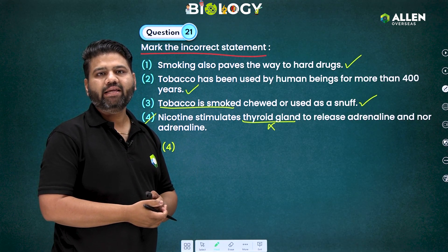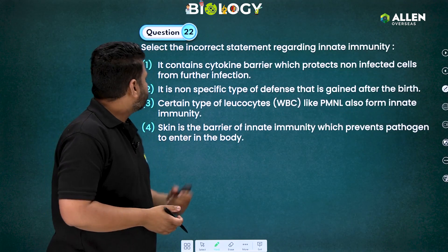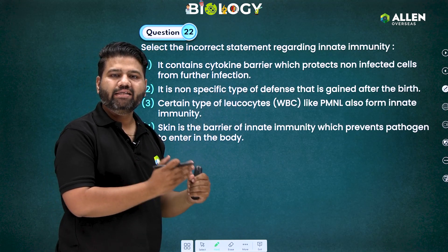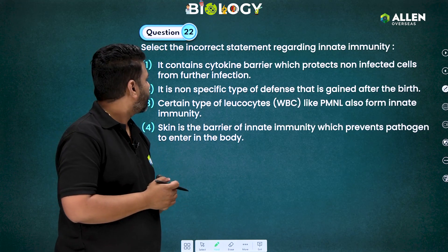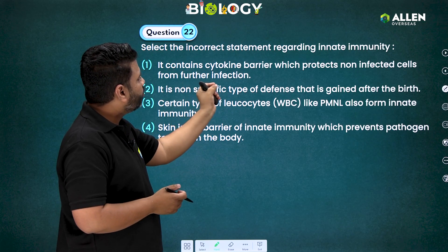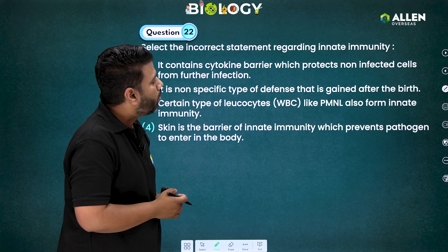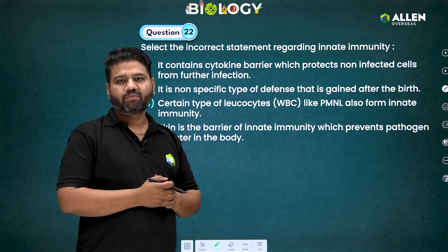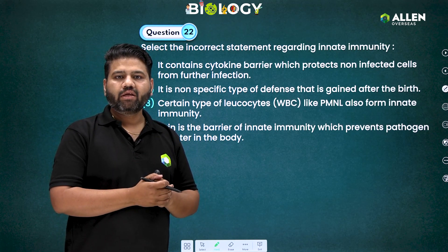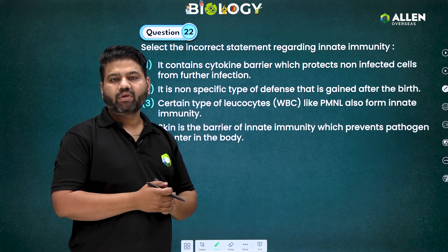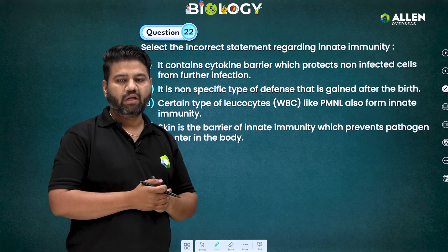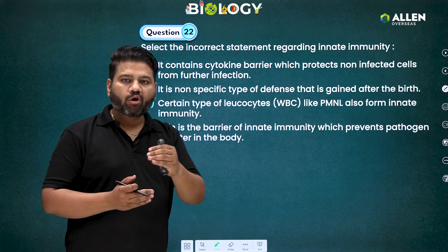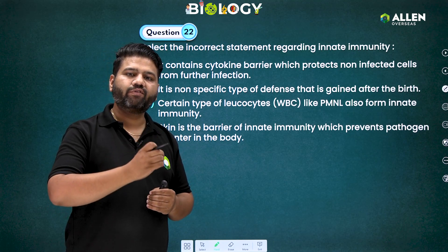Now let's talk about question number 22: select the incorrect statement regarding innate immunity. The first statement says it contains a cytokine barrier which protects non-infected cells from further infection. In innate immunity, the cytokine barrier works through interferon, which is released from virus-infected cells to protect the normal surrounding cells from further infection. Therefore statement one is correct.